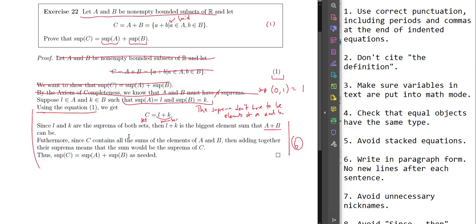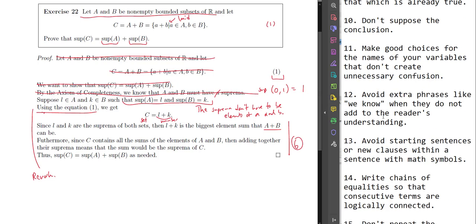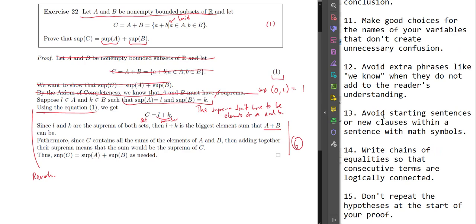We've been doing this for about 45 minutes, but we've identified 15 big issues. If you can avoid those 15 things in the following week, it's going to make it a lot harder for me to pick your work apart. I hope this helps — have a wonderful day.